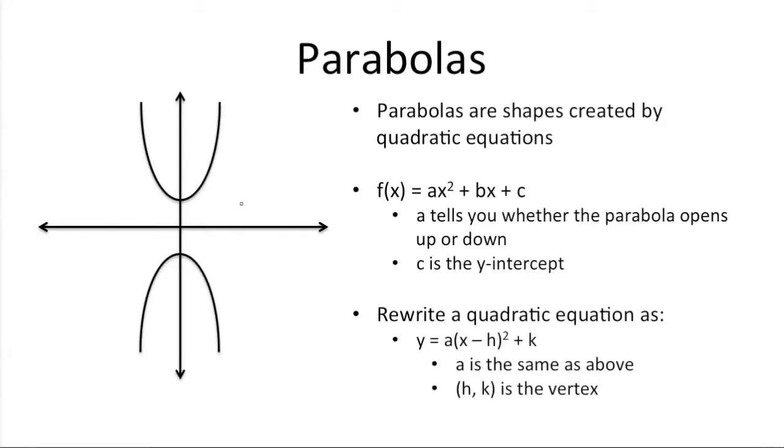The u shape you just saw is called a parabola. Parabolas are shapes created by quadratic equations. Now if you remember quadratic equations, they follow the form f of x is equal to ax squared plus bx plus c. It's quadratic because the largest exponent here for a variable is 2. So generally, when quadratic equations follow this form, some of these numbers actually tell us something about the parabola. For instance, a, which comes in front of the x squared term, tells you whether the parabola opens up or down.